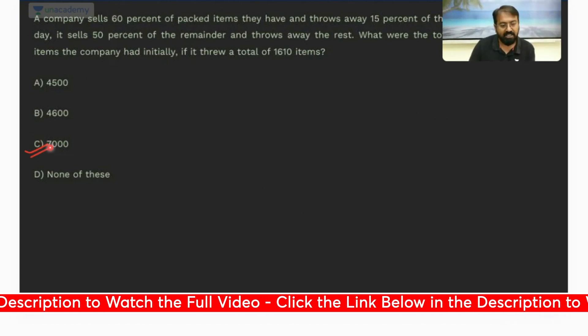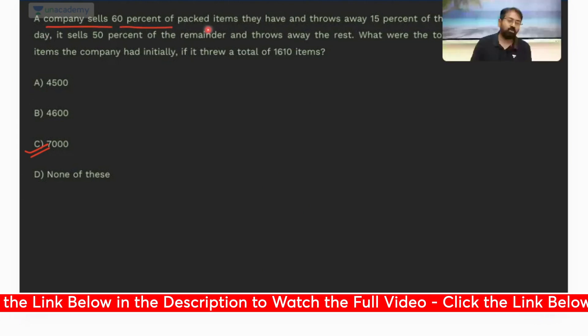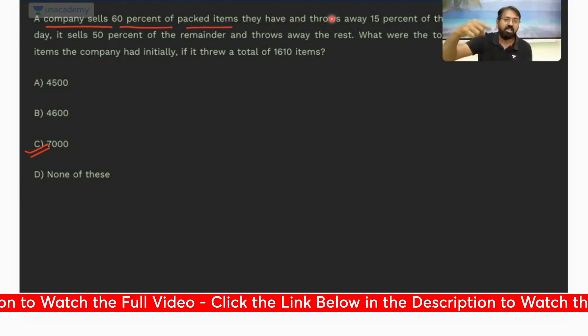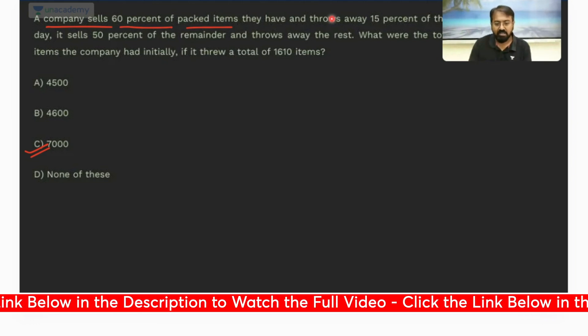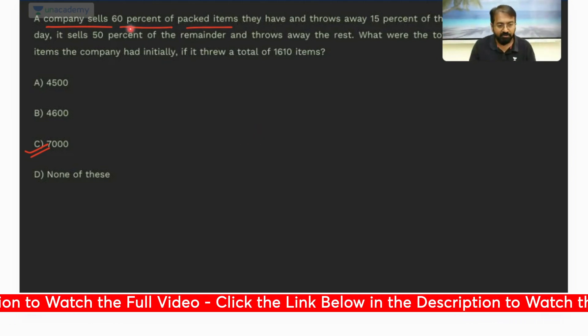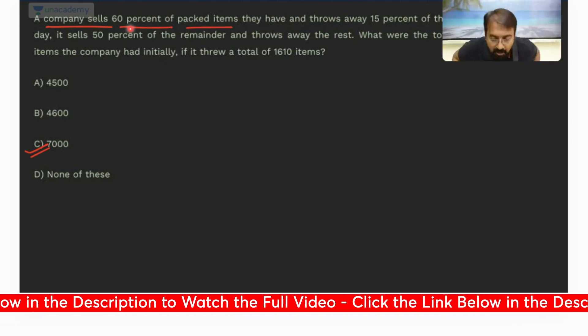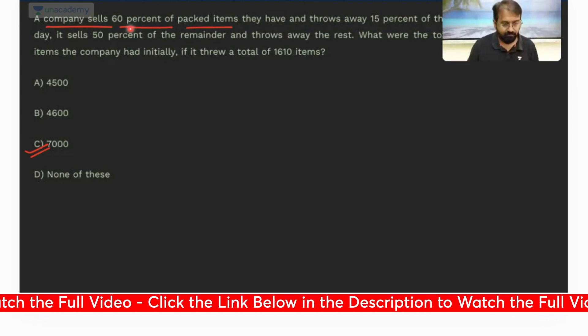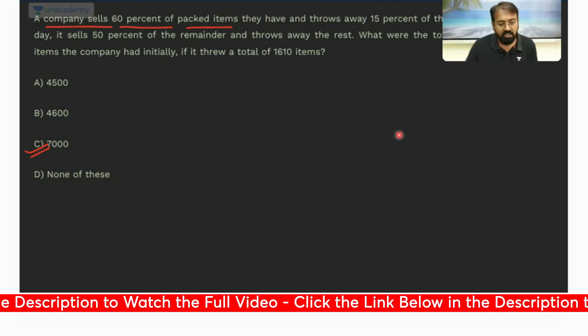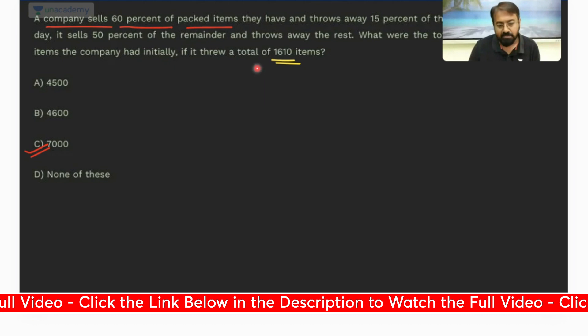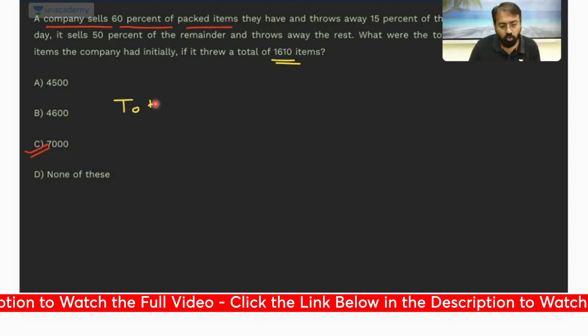Did you get the answer for this question? This is a simple calculation, 7000 will be the answer. A company sells 60% of packed items. Now there is some issue, continuously it is refreshing. Just be there, let me refresh my system once so that this continuous lag doesn't come. Let's understand how to solve this question. Pay your attention.